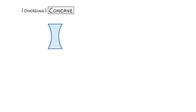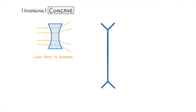Let's start with concave, or diverging lenses, which are the ones that cause the light rays to diverge and spread out. To represent a concave lens when you're drawing a ray diagram, we use this symbol here. You can see that it has these outwards pointing V shapes at either end, because they show that concave lenses get wider towards their ends.